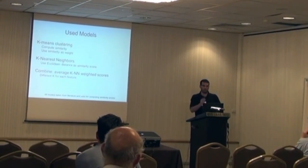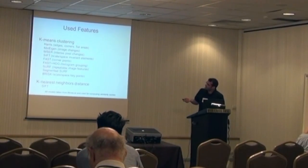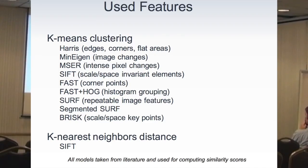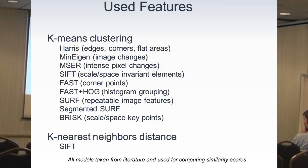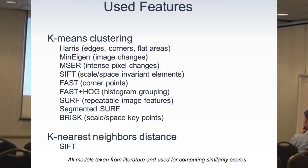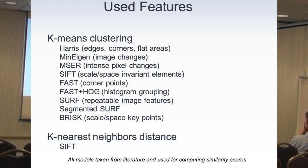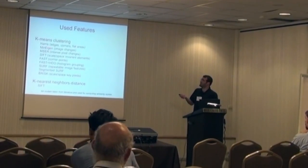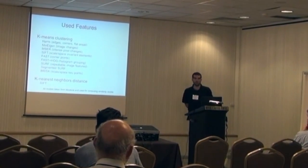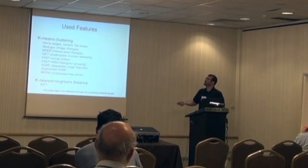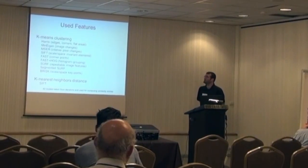The difference between the k-means models is mainly the features used and some tuning parameters. For the k-means clustering, we used features all taken from the literature. In practice, we have seven different scores to compute, so seven different regression problems. You cannot guess which feature will perform better for each problem, so we took as many as we could in the time frame we had and tested them.